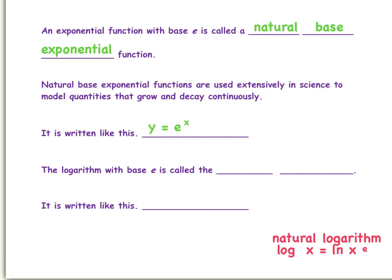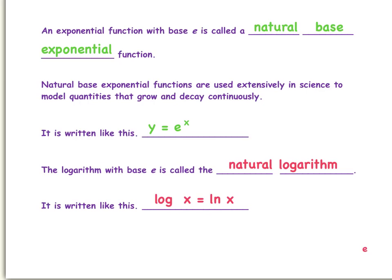The logarithm with base e is called the natural logarithm, and it is written like this: log base e of x is equal to the natural log of x. So ln is what we use to represent natural log. Basically, log base e and ln are the same thing.